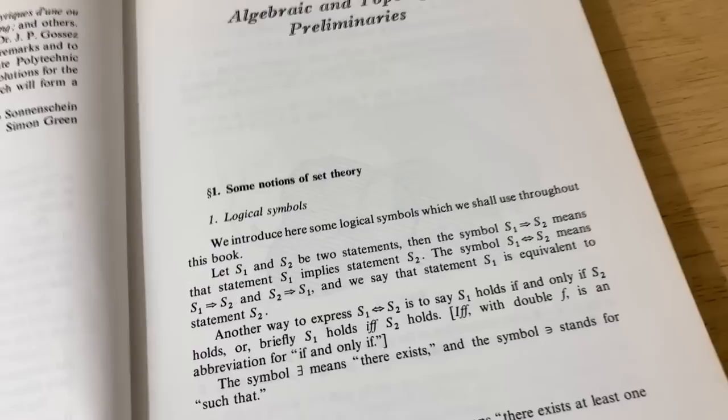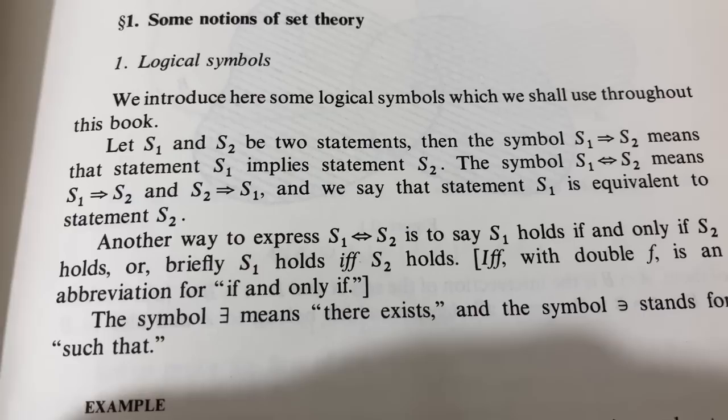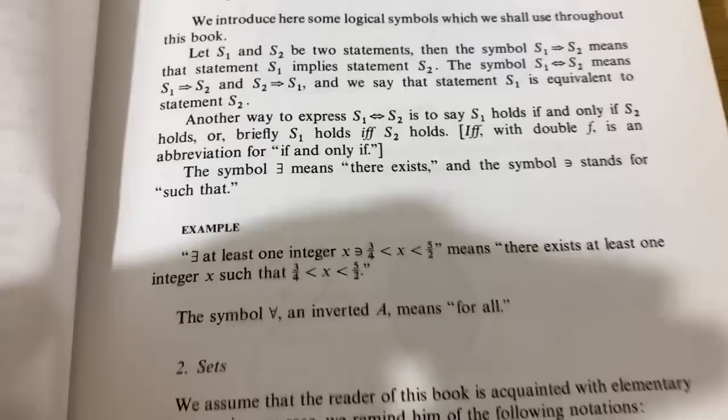So some notions of set theory. We introduce here some logical symbols, which we shall use throughout this book. Let S1 and S2 be two statements. Then the symbol S1 implies S2 means that the statement S1 implies the statement S2. So they just give you some logical symbols, which is useful.